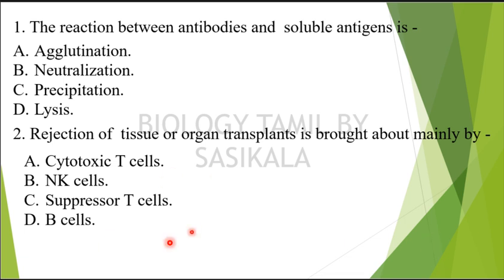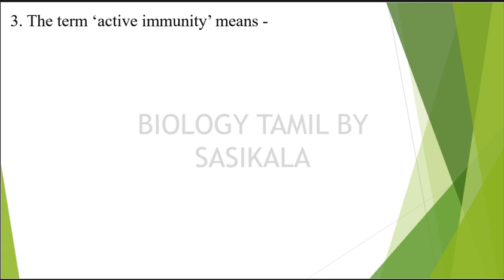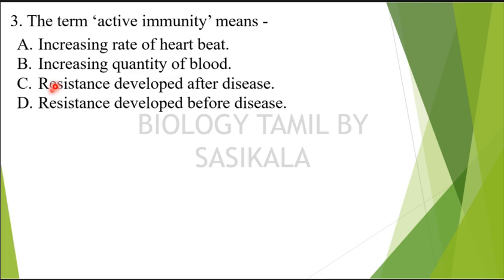Question 3: What do we say active immunity means? The choices are: increasing rate of heartbeat, increasing quantity of blood, resistance developed after disease — that is, after disease, resistance power is developed, we say active immunity — or resistance developed before disease. What do we say about active immunity?